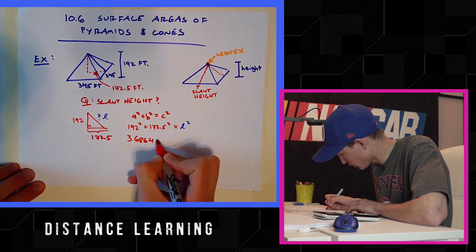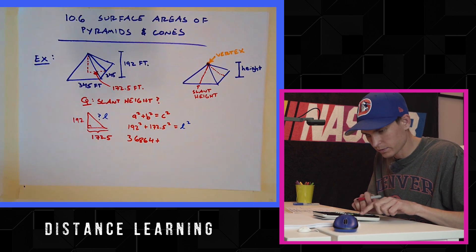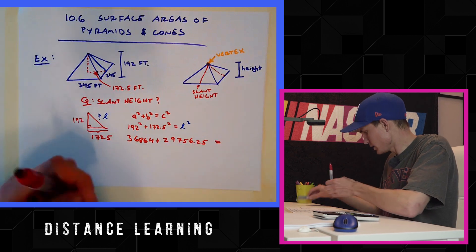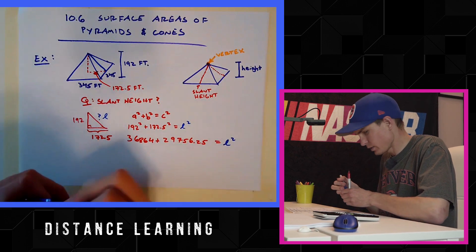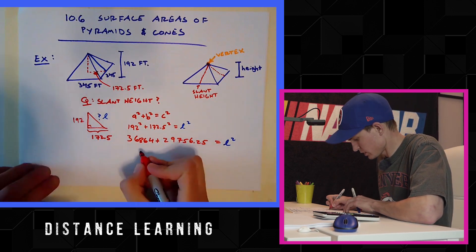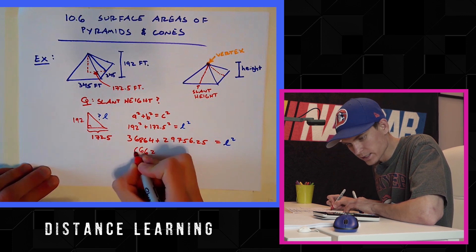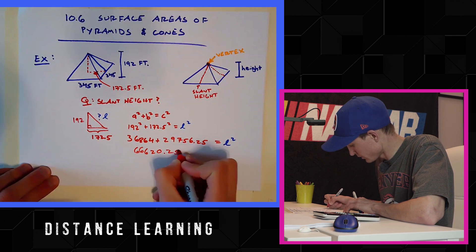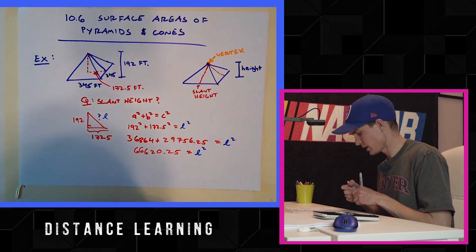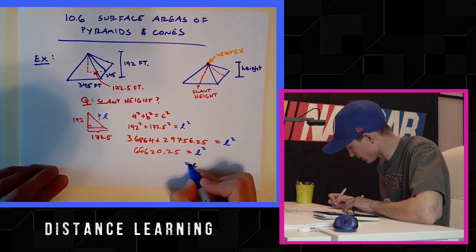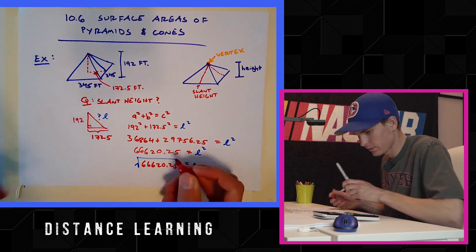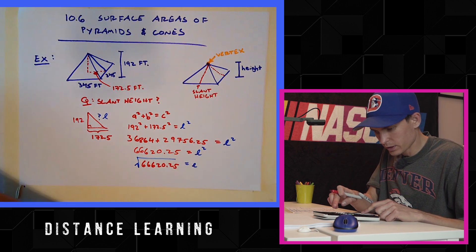So remember, a and b don't really matter, just make sure it's not the hypotenuse, make sure they're the legs. So one of these two sides is a. We'll go with 192 squared plus 172.5 squared equals, we'll use L for our slant height, right? 192 squared is a huge number, holy moly. 36,864 plus 172.5 squared is 29,756.25 equals slant height squared. If I add those two together, gross, you get 66,620.25.